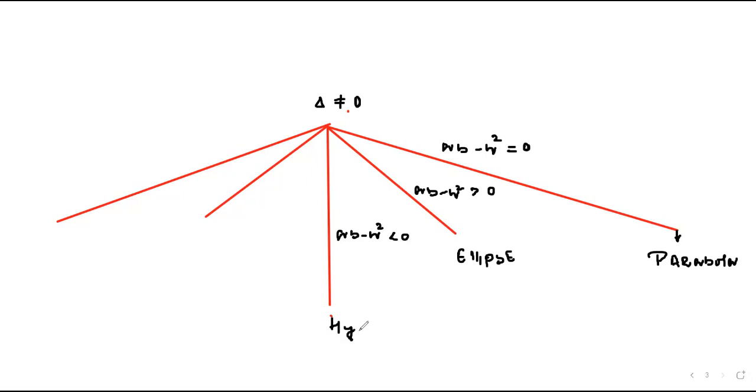And if ab minus h square is less than zero, the equation will represent hyperbola. And again, if ab minus h square is less than zero, with an extra condition, that is, a plus b is zero, we can say this represents a rectangular hyperbola.